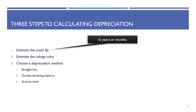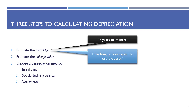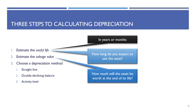Just some definitions here. Useful life could be in years or months. Sometimes depreciation is recorded every year, sometimes at the end of every month, sometimes even at the end of every quarter — every three-month period. Useful life is how long you expect to use the asset. Salvage value is how much you expect the asset to be worth at the end of its life.